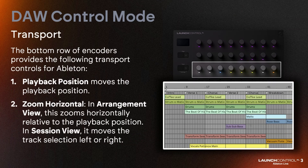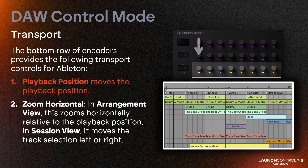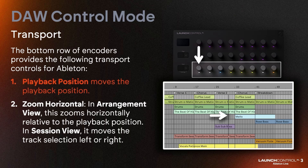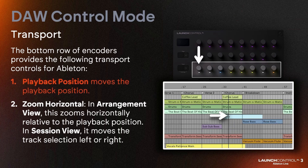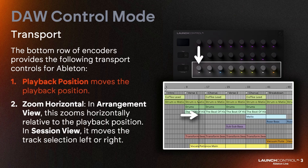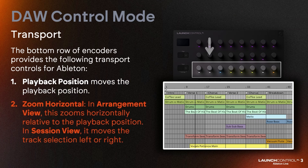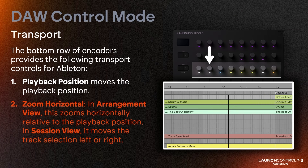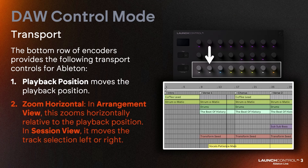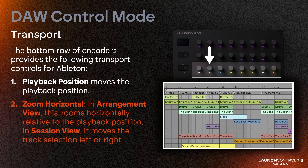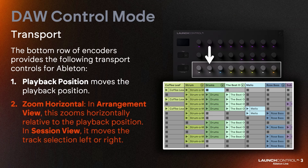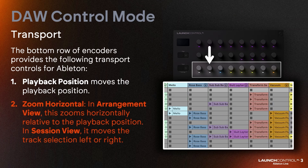The bottom row of encoders provides the following transport controls for Ableton. Playback position moves the playback position. Zoom horizontal: in Arrangement view, this zooms horizontally relative to the playback position; in Session view, it moves the track selection left or right.